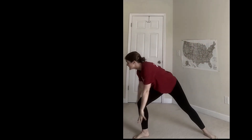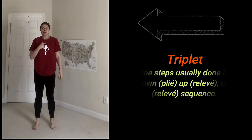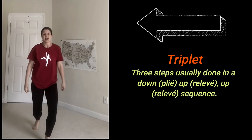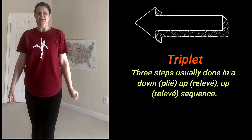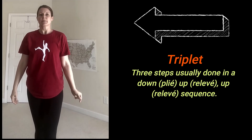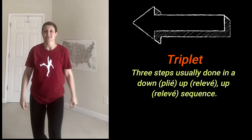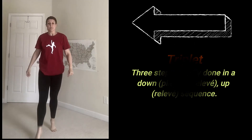All right, last one — triplet. I go first: down, up, up. You go: down, up, up. I go: down, up, up. You go: down, up, up. Down, up, up.